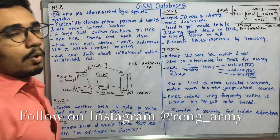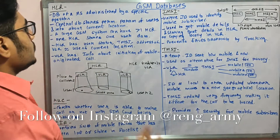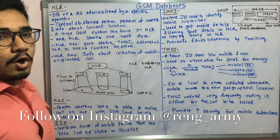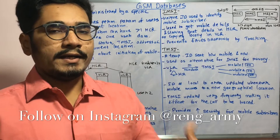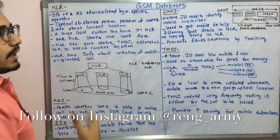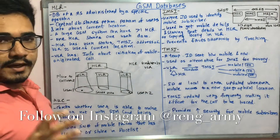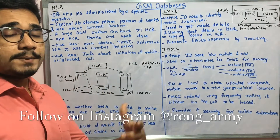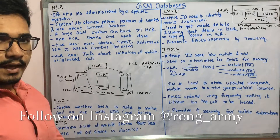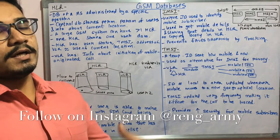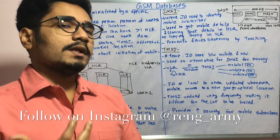First of all, we have the Home Location Register, that is the HLR. It's a database of our mobile station and administered by a specific network operator — like Jio, Vodafone, Airtel, AT&T, IDEA, and others. HLR is a central database which stores permanent parameters of users and information about their current location, which is their hometown and from where they purchased the phone, and all the relevant data.